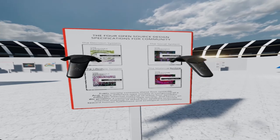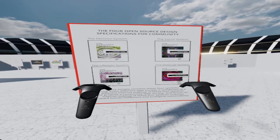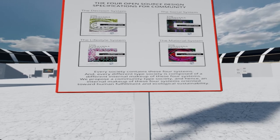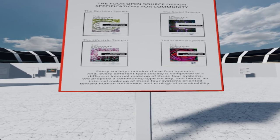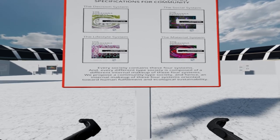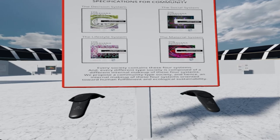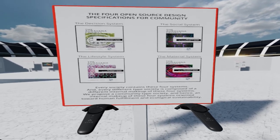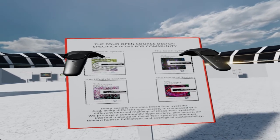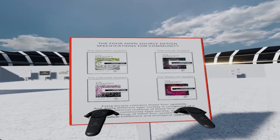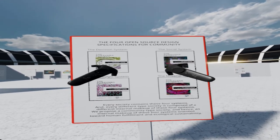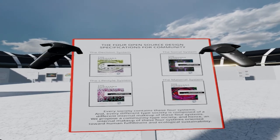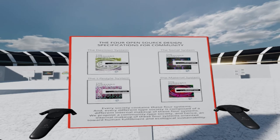Every society is composed of the following four interrelated systems: a social system, a decision system, a lifestyle system, and a material system. Different types of societies have different internal compositions of these four systems. In other words, the internal composition of these systems determines the type of society you are dealing with. The type of society described by these four Oravana Project specifications is a community-type society.